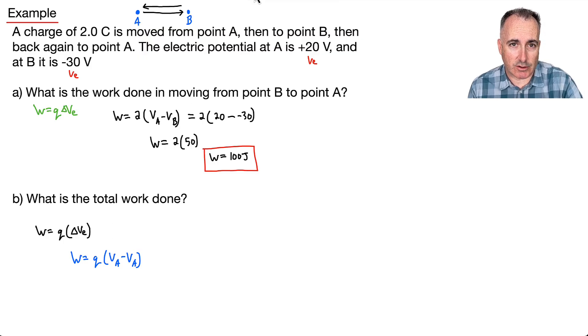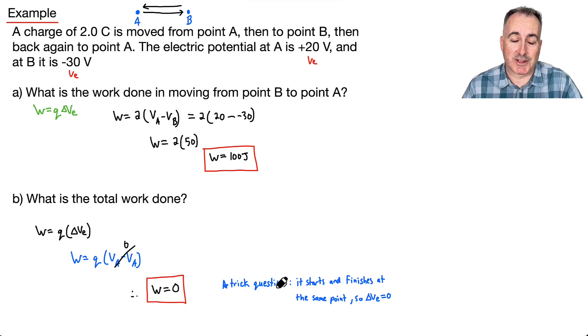So that means if it goes from A to A, well, this right here, then it's just going to cross out, won't it? Just give you 0. So that means the work done then will be 0. So I said it's a trick question, right, because it starts and finishes at the same point. If it did that, that means delta VE is 0, and that means then that the work done is 0 since it's times, right? It's multiplied by. There we go.